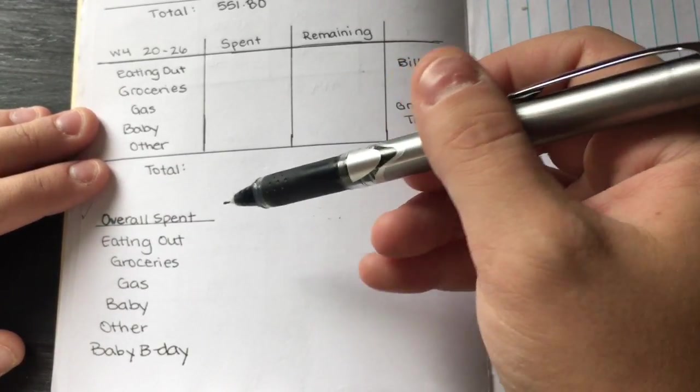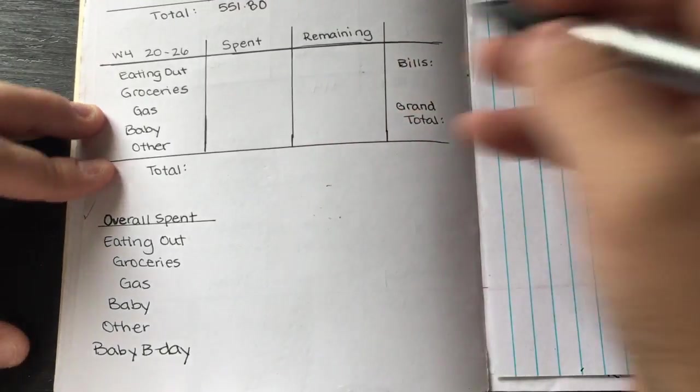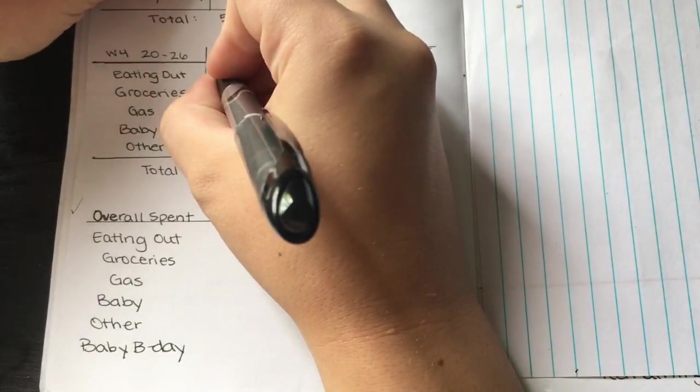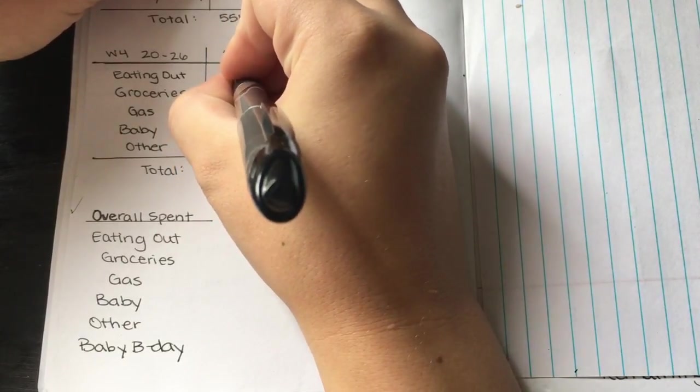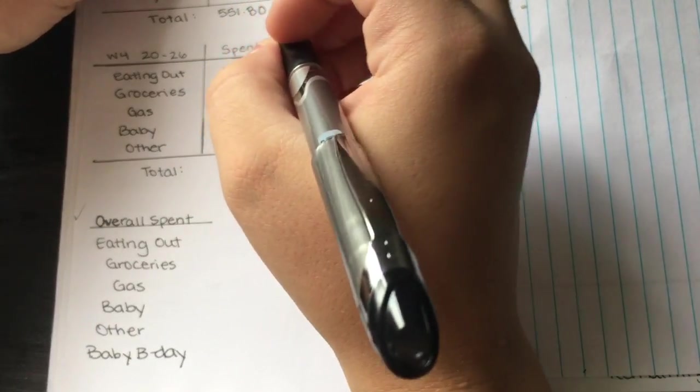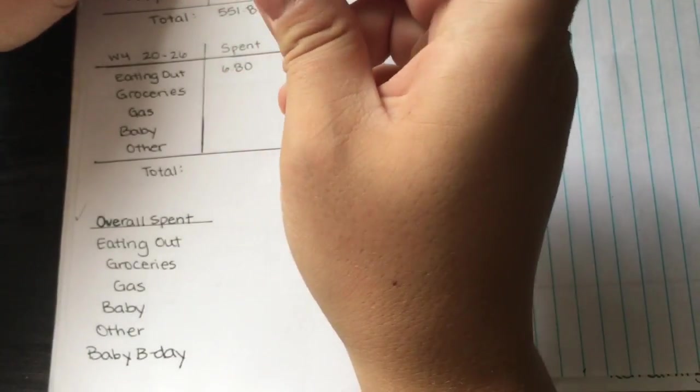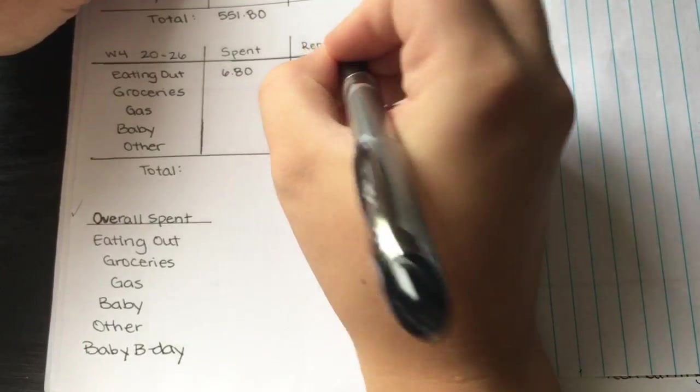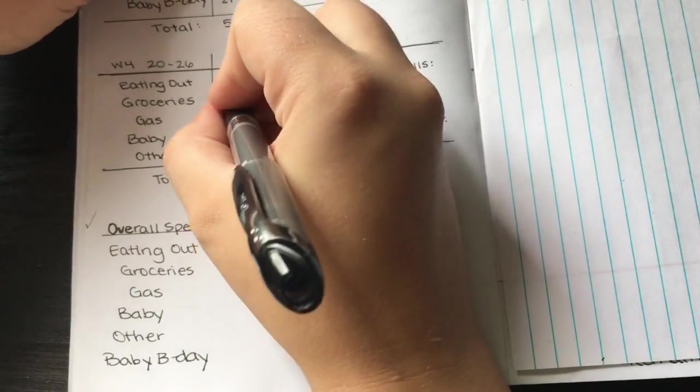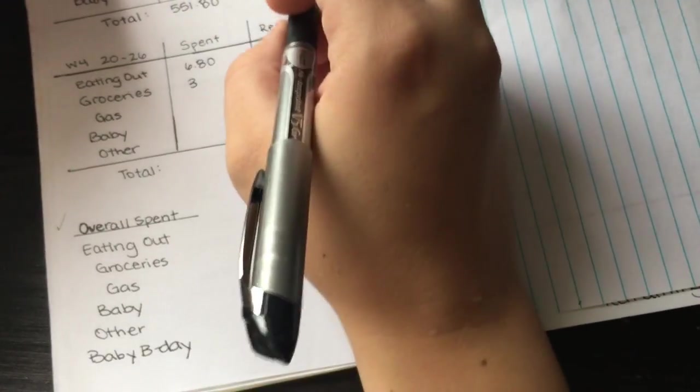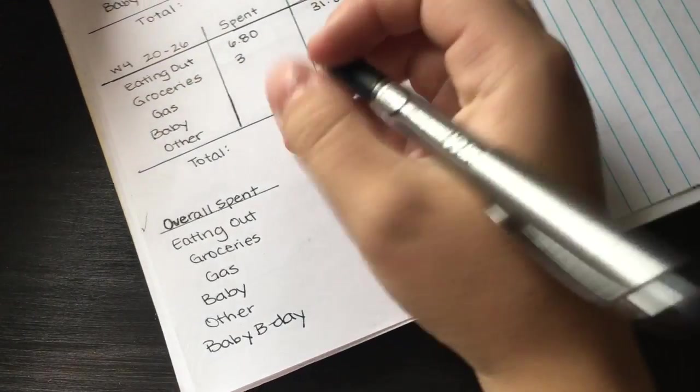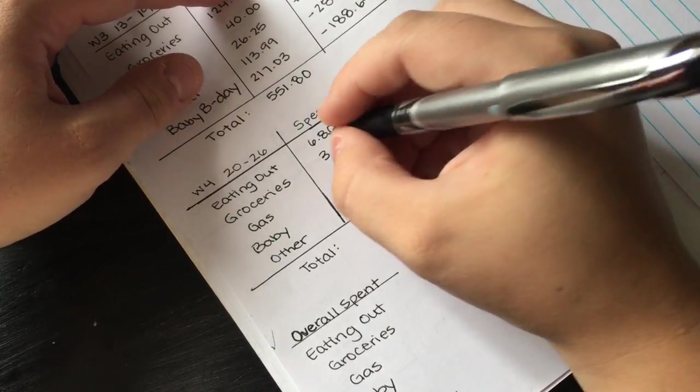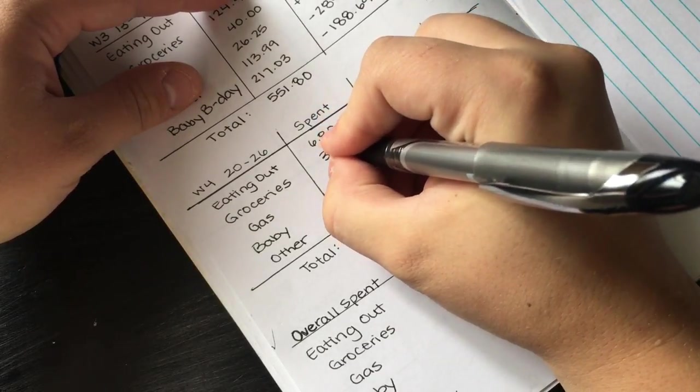Eating out was $6.80, so remaining we had $31.81. Groceries we spent here, I'm gonna turn it so you guys can actually see me writing. There, that's way better. Okay, so groceries we spent $308.93.